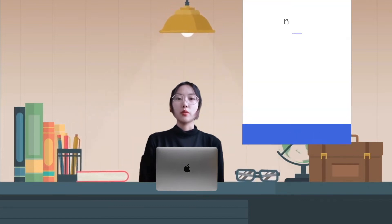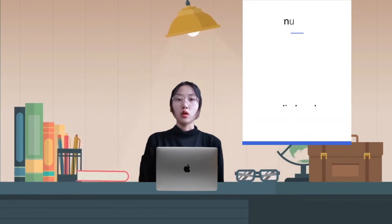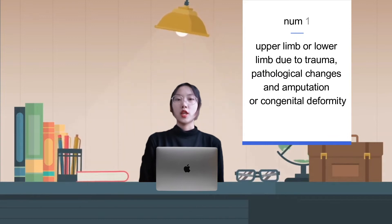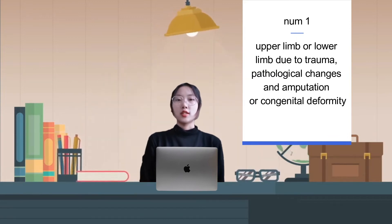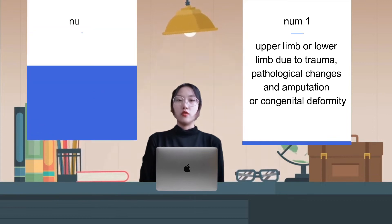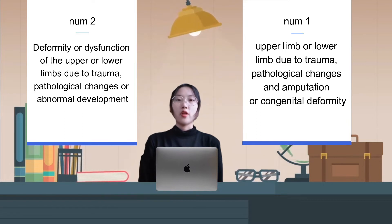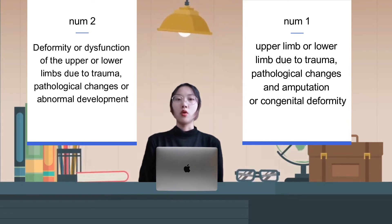Physical disabilities include: 1. Upper limb or lower limb loss due to trauma, pathological changes, amputation, or congenital deformity. 2. Deformity or dysfunction of the upper or lower limb due to trauma, pathological changes, or abnormal development.